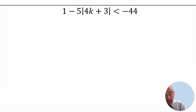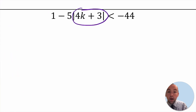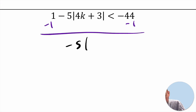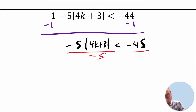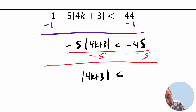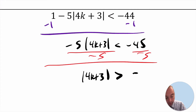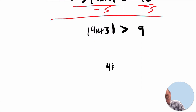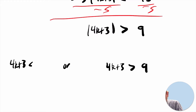For the next one, we need to isolate the absolute value first. We subtract 1, giving negative 5 times the absolute value of 4x plus 3 equals negative 45. Then divide by negative 5, which flips the inequality symbol, and negative 45 divided by negative 5 is positive 9. So the absolute value of 4k plus 3 is greater than 9, meaning the distance of 4k plus 3 from 0 must be greater than 9. This implies 4k plus 3 is greater than 9, or 4k plus 3 is less than negative 9.